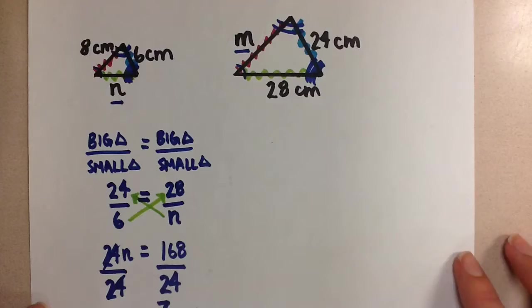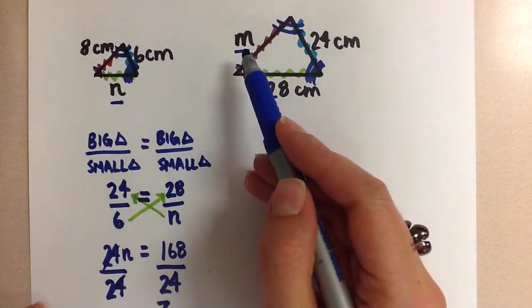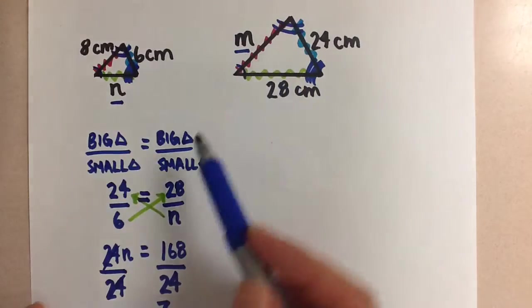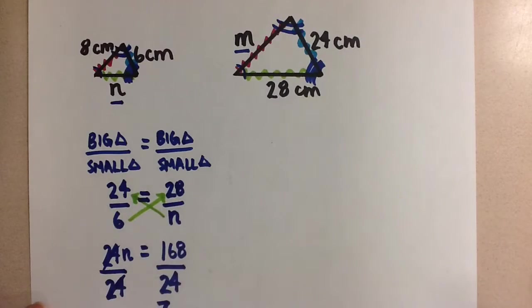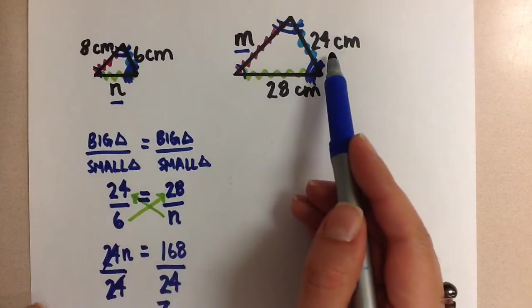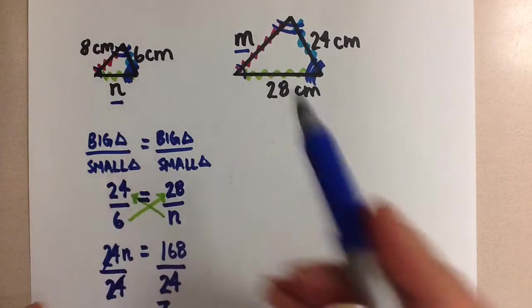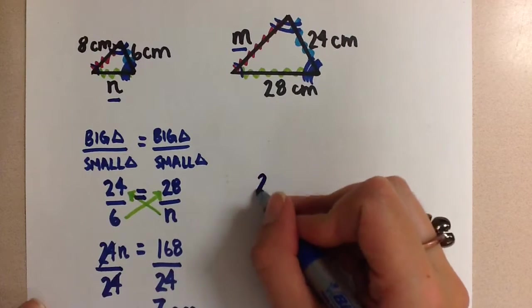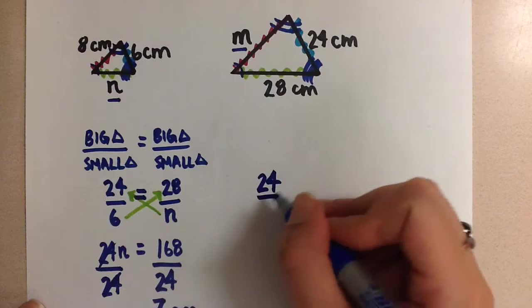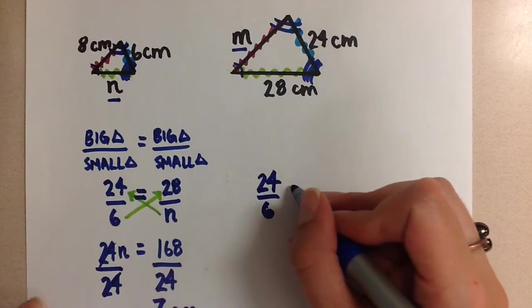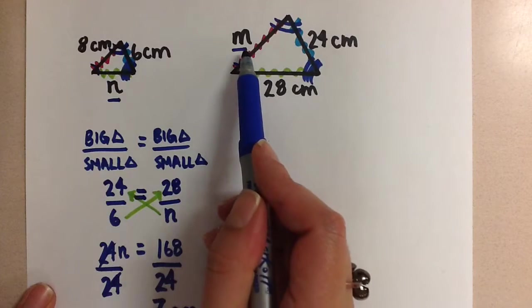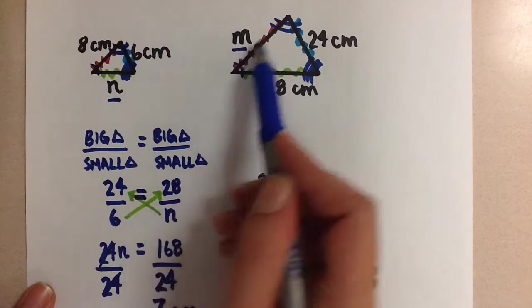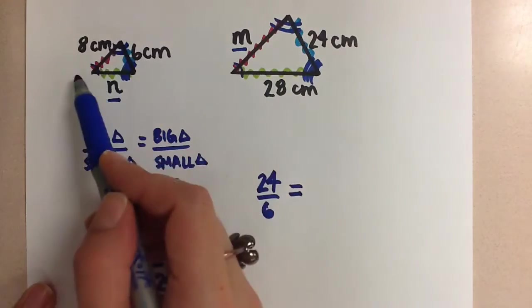Now let's do this again to solve for the side length m. So we're going to follow the same convention that we have here to set up the proportion. Let's choose the 24 and the 6 again, because those are the numbers that were given to us in the problem. So we know for sure that they are correct. So 24 over 6 equals, now we're going to choose the pair of sides that correspond with the n. m over 8.